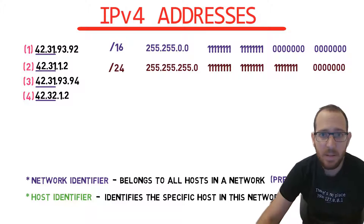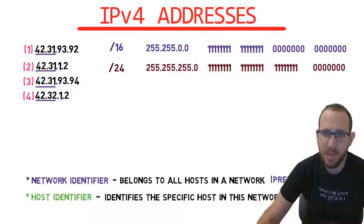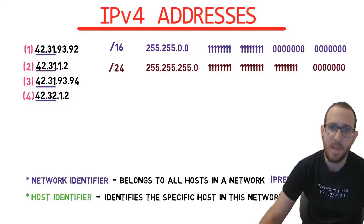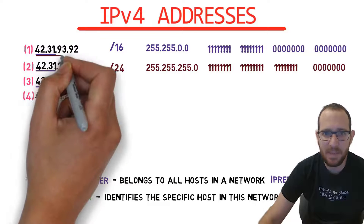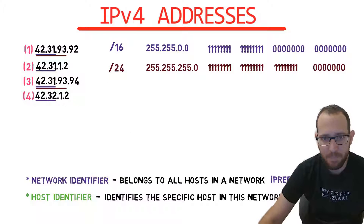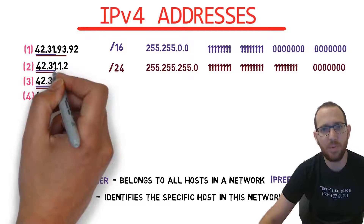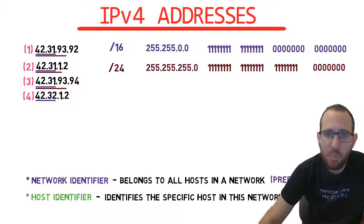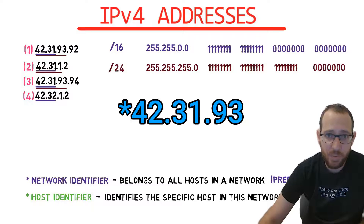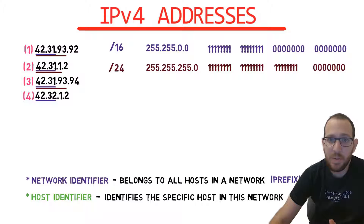Given this subnet mask, do addresses 1 and 3 belong to the same network? They do, as they both have the same most significant 3 bytes. What about addresses 1 and 2? Given this network prefix, they don't belong to the same network. Address 1 belongs to network 42.32.93, whereas address 2 belongs to network 42.31.